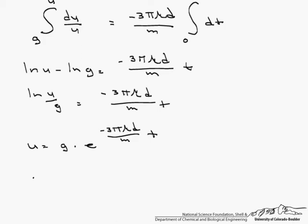So g minus 3 pi mu dv over m equals g times e to the minus 3 pi mu d over m times t.